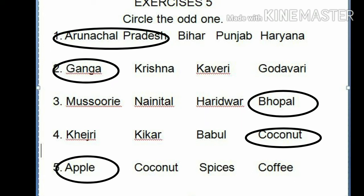Number 5: Apple, Coconut, Spices, Coffee. Apple is the odd one because coconut, spices, and coffee grow in coastal plains, while apple grows in hilly areas.